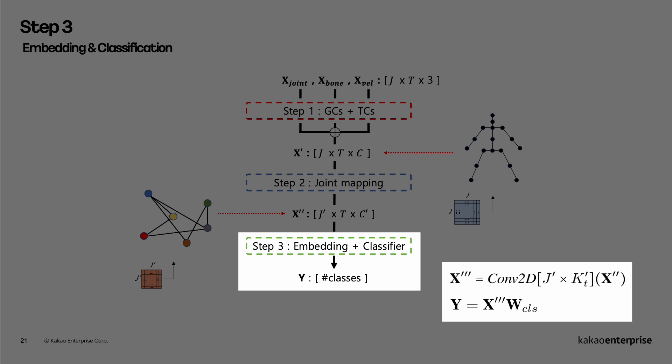At the last step, we employ a single 2D convolutional layer with J' sized kernel to perform a cross-correlation between J' nodes before classification.